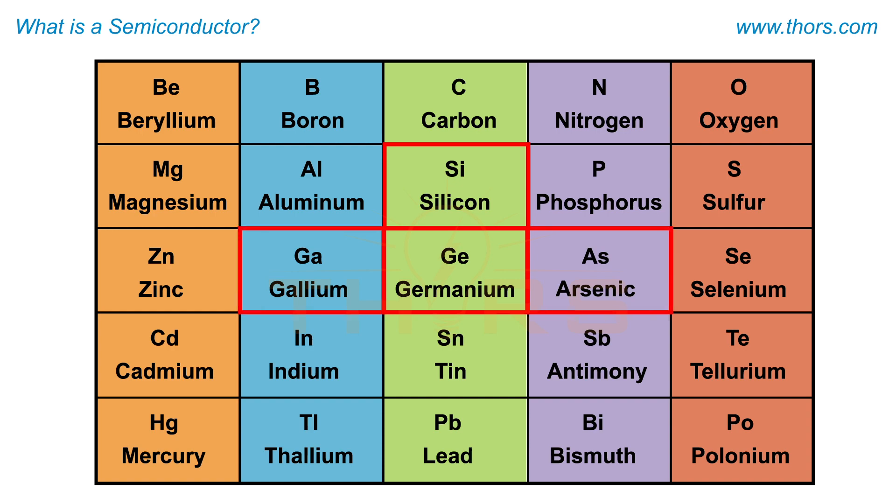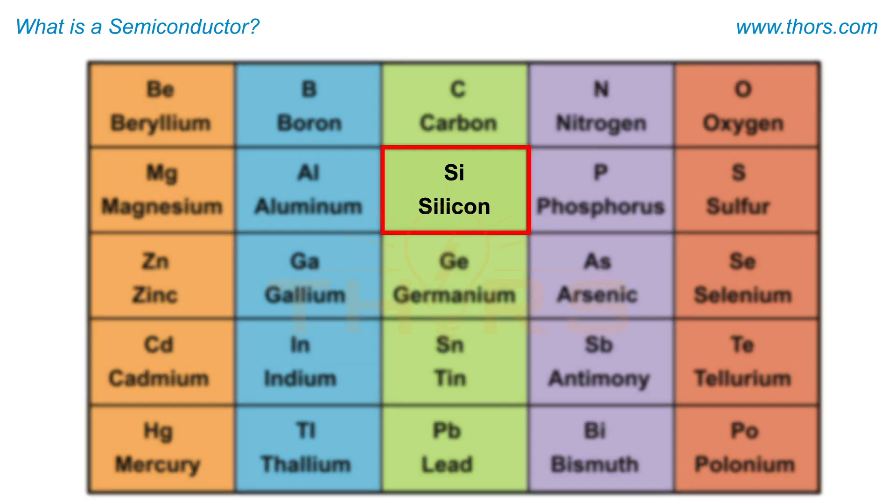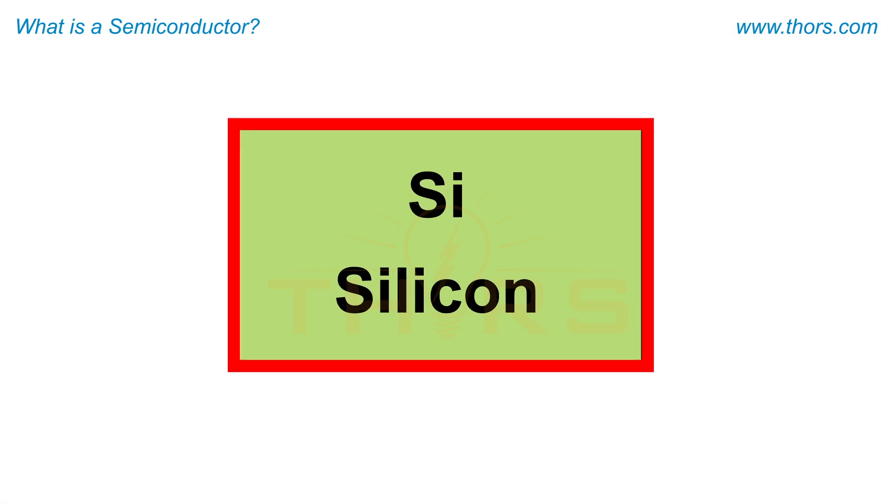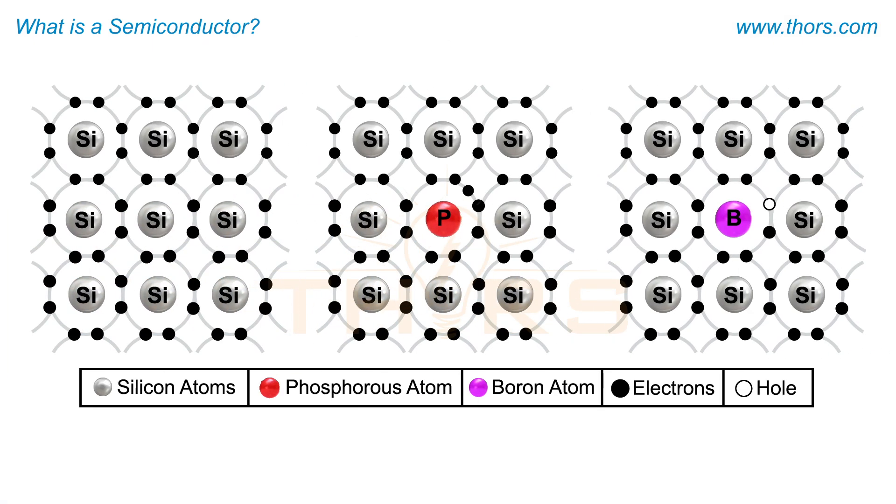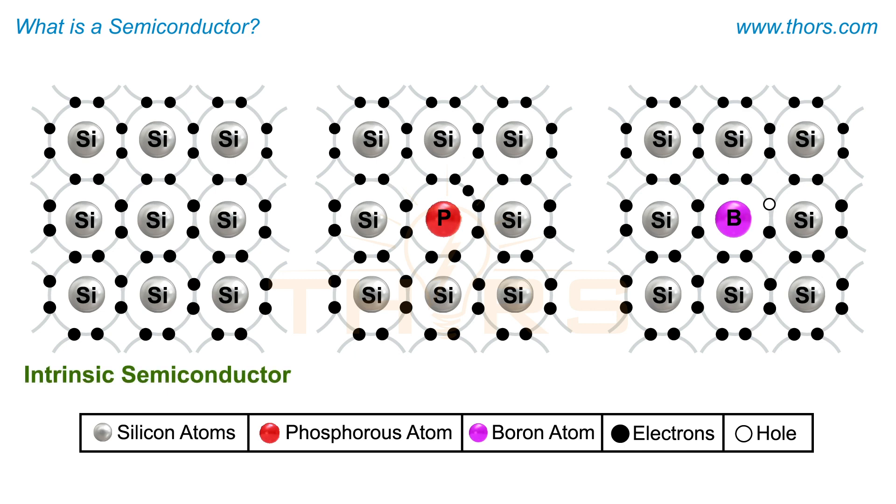Silicon is the most prevalent semiconductor material used. The two forms of semiconductors include intrinsic semiconductors and extrinsic semiconductors.